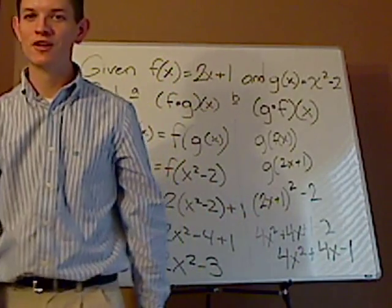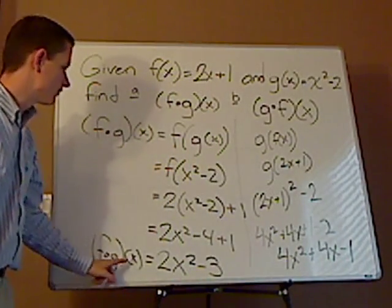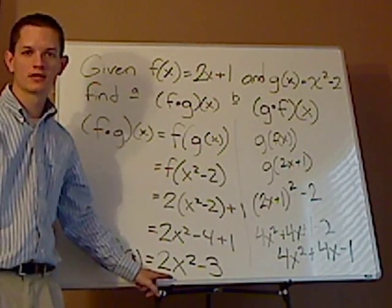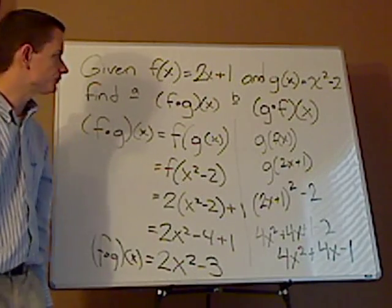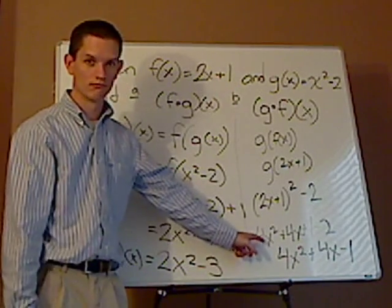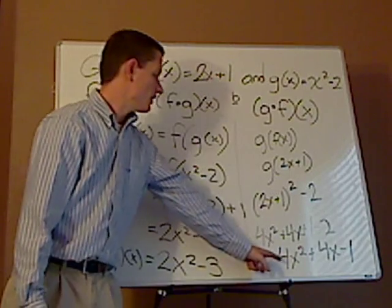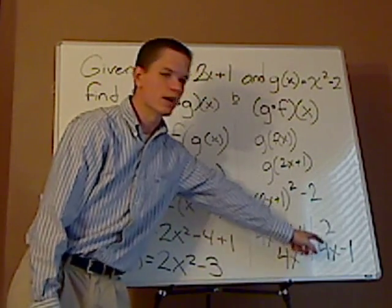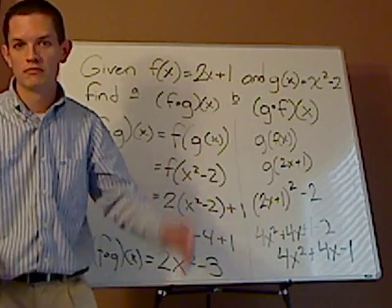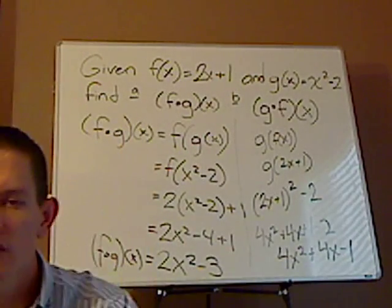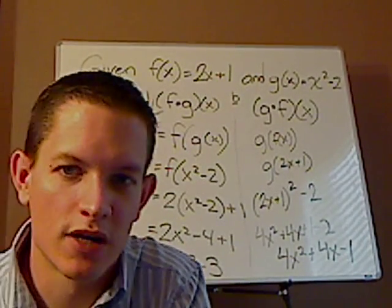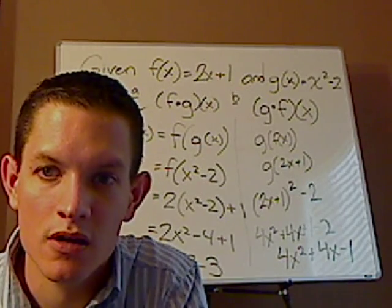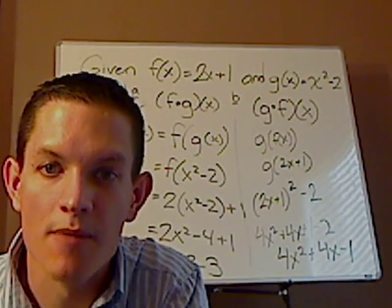And that's pretty much it. So for fog, you get 2x squared minus 3. And then for goof, or goofy if you prefer, it would be 4x squared plus 4x minus 1. And that's it. Just don't make this more complicated than it is. Just think substitution.